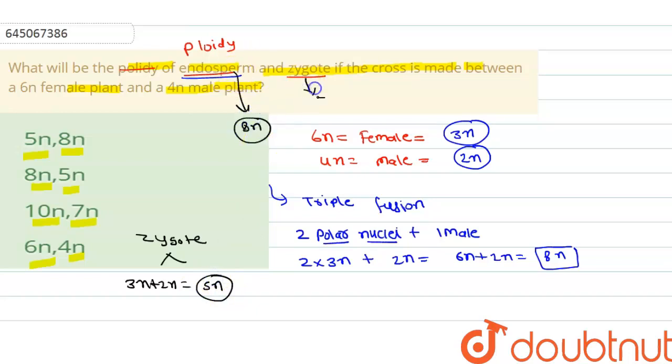Now talk about options. First option is given 5n and 8n, so that is incorrect, it is opposite. 8n and 5n, that is right answer. 10n and 7n incorrect, 6n and 4n that is also incorrect. So option second is right answer for this question. I hope you understand this solution, thank you.